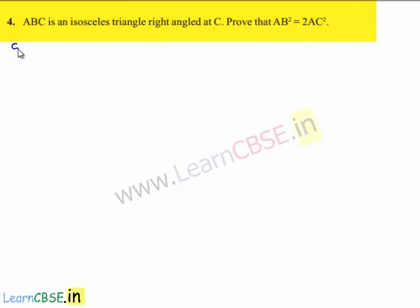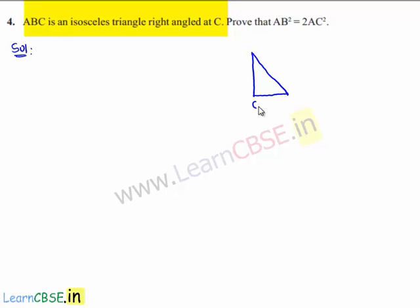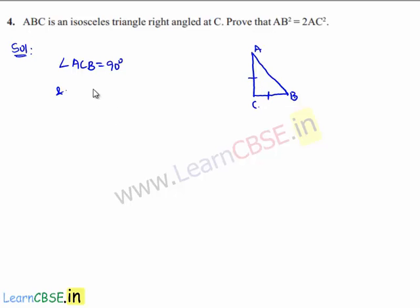Moving on to the solution, it is given that ABC is a triangle with right angle at C. That means angle ACB is equal to 90 degrees, and as it is an isosceles triangle, AC will be equal to BC.